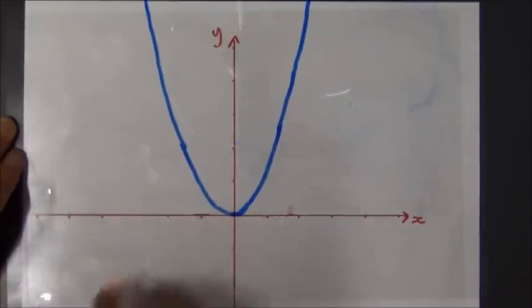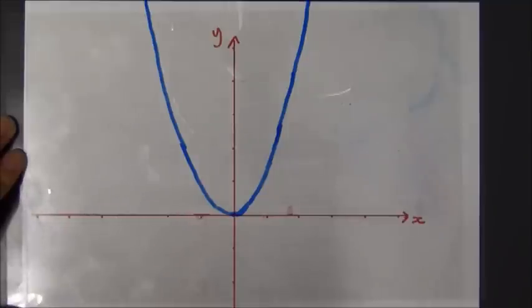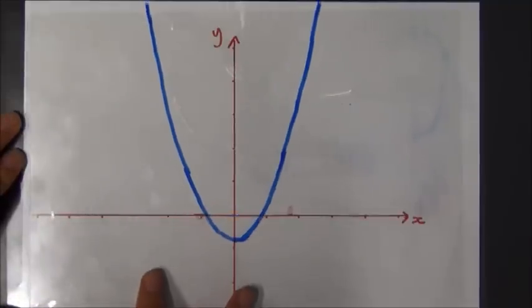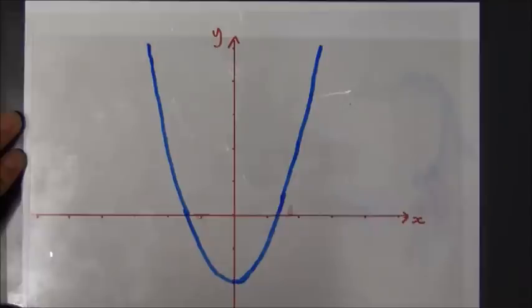Similarly, if I had the graph of y equals x squared minus 2, I'd move two places down the axis like that. Fairly straightforward.